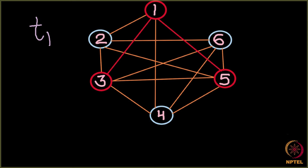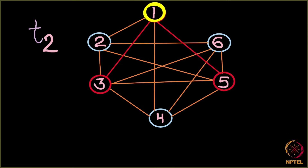Node 1 was infected at day 0, and now it is day 1. Towards the end of day 1, node 1 is going to be recovered. It has infected nodes 3 and 5 in the network. On day 2, node 1 does not infect anybody, but nodes 3 and 5 start doing their work. Let's say node 5 ends up infecting node 4. Node 3 is unable to infect any of its neighbors — node 2, node 6, or node 4. Node 3 also cannot infect node 1 because node 1 has already recovered.